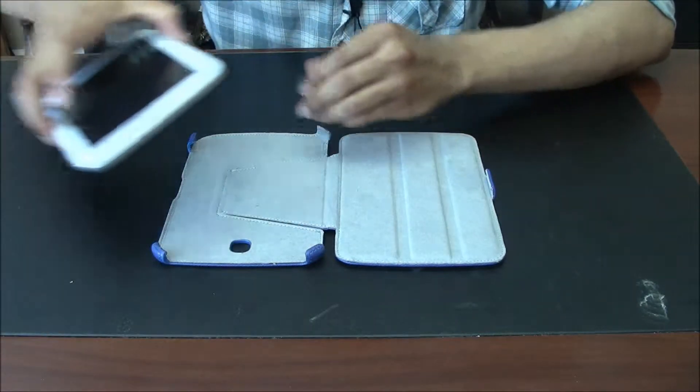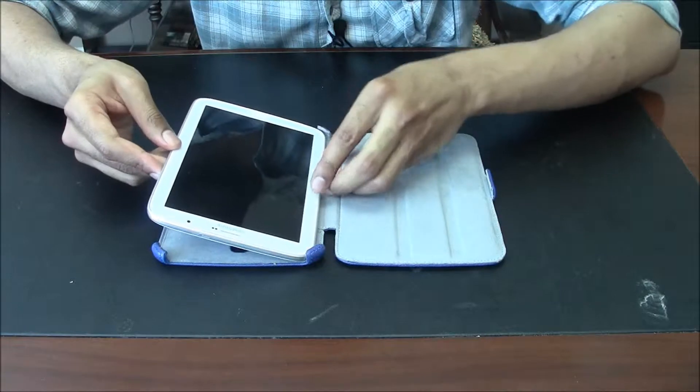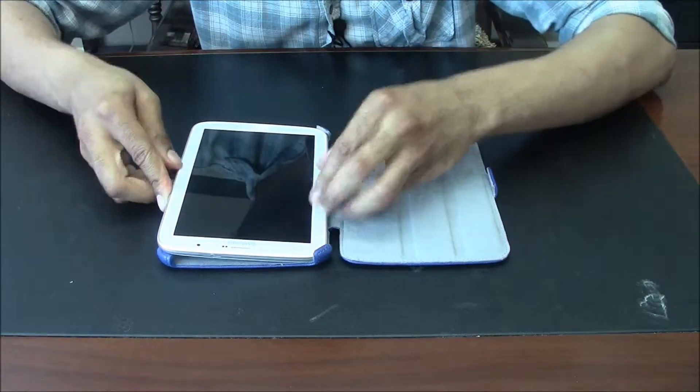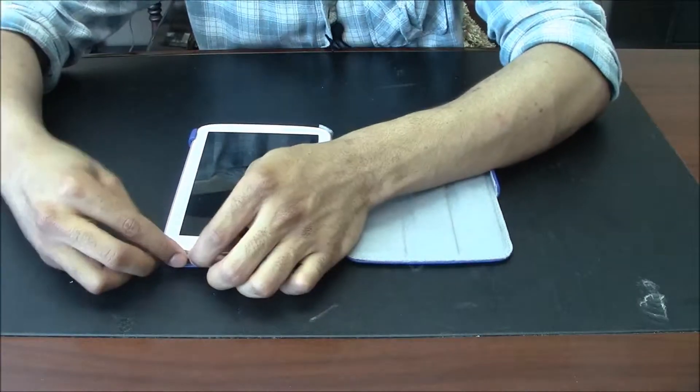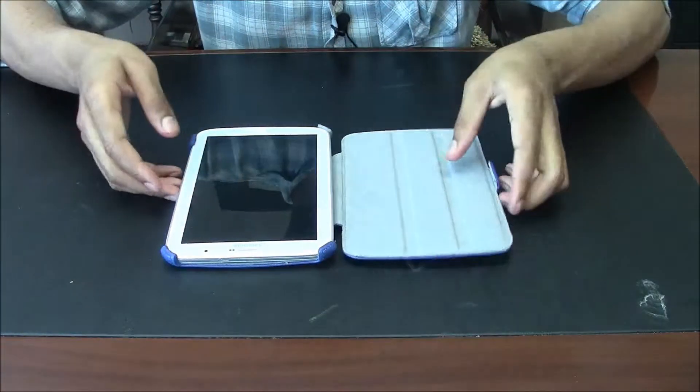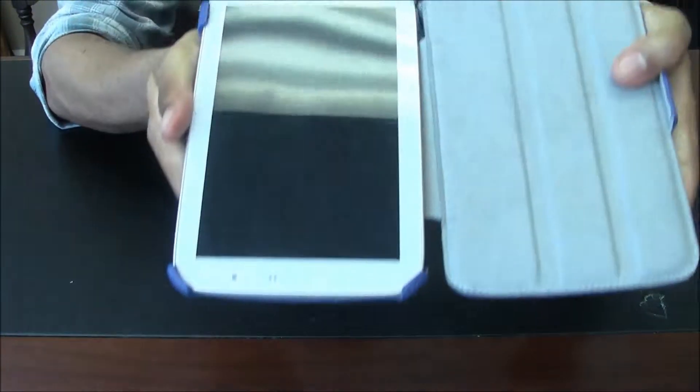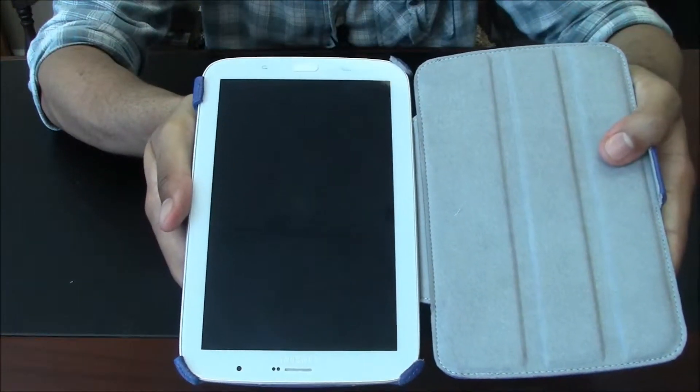And when you install your tablet, it's a very snug fit. You want to place it in on one side, and then on each corner you want to snap it in like this. This way it protects and holds on to each corner of your tablet.